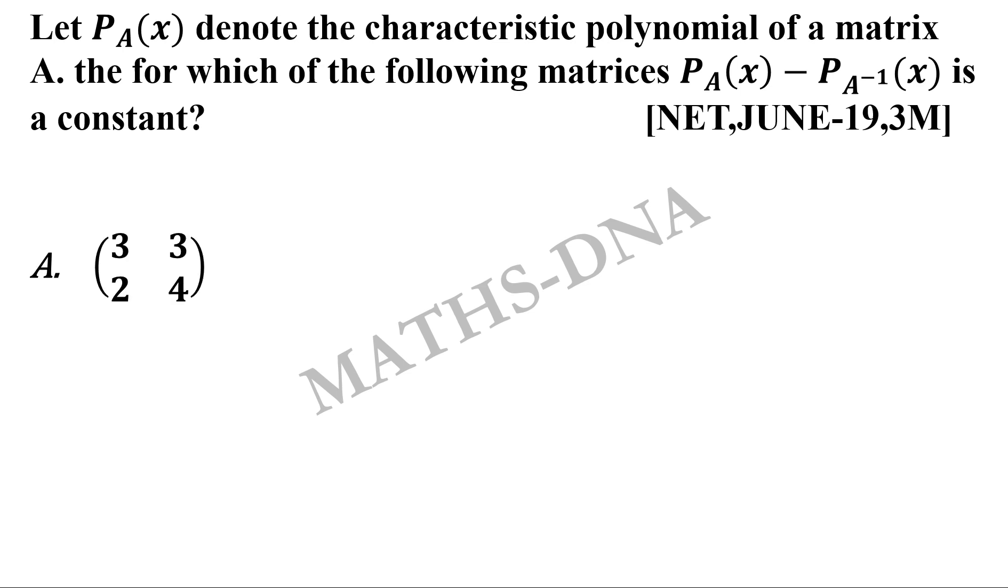The options are: A: a 2×2 matrix whose entries are 3, 3, 2, 4. B: a 2×2 matrix with entries 4, 3, 2, 3. C: a 2×2 matrix with entries 3, 2, 4, 3.